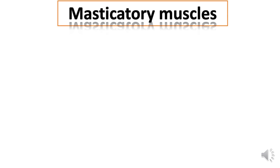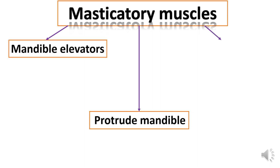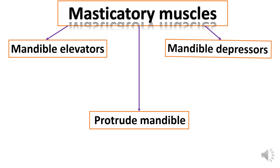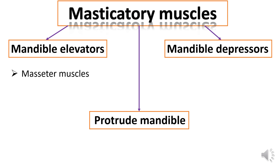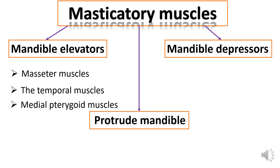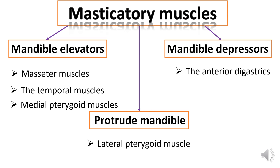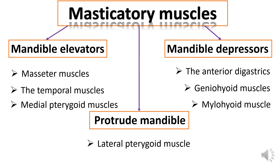Masticatory muscles are most involved in the movement of the temporomandibular joint. According to their function, they are divided into muscles that elevate the mandible, muscles that protrude the mandible, and muscles that depress the mandible. The muscles that elevate the mandible include the masseter, temporal, and medial pterygoid muscles. The muscles that protrude the mandible include the lateral pterygoid muscles. The muscles that depress the mandible include the anterior digastric, geniohyoid, and mylohyoid muscles.